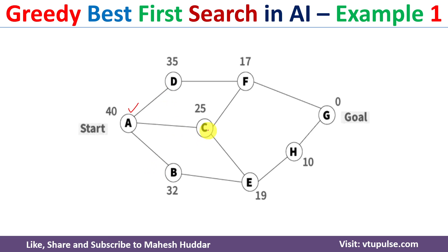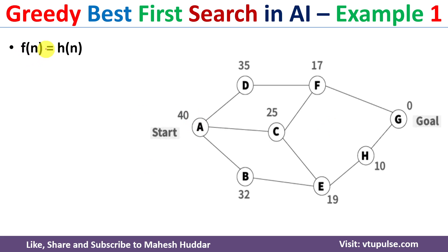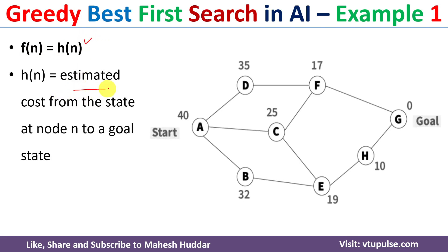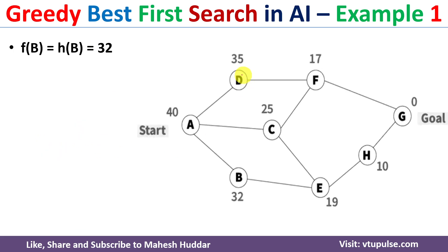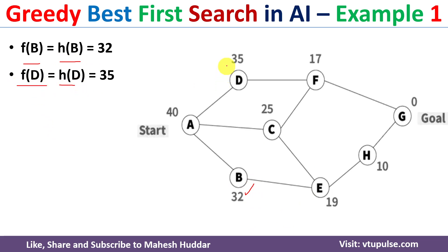Among these three actions, we need to select the one which is closer to the goal node. We calculate the value of f(n) = h(n), where h(n) is the estimated cost from node n to the goal state. So: f(B) = h(B) = 32, f(D) = h(D) = 35, and f(C) = h(C) = 25.